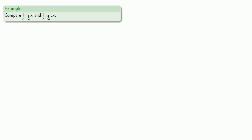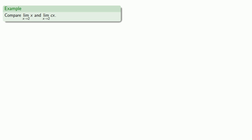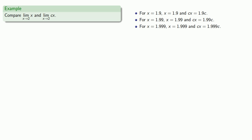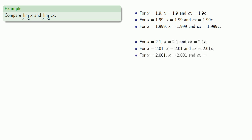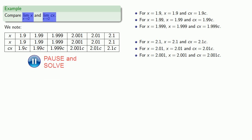A useful thing in math and in life is to be able to compare two different things. Let's compare the limit as x approaches 2 of x and the limit as x approaches 2 of c times x, where c is some constant. We might take x values close to but not equal to 2: 1.9, 1.99, 1.999, and find the value of x and c times x. Similarly, we'll take x values close to 2 but above 2: 2.1, 2.01, 2.001, and find the value of x and c times x.